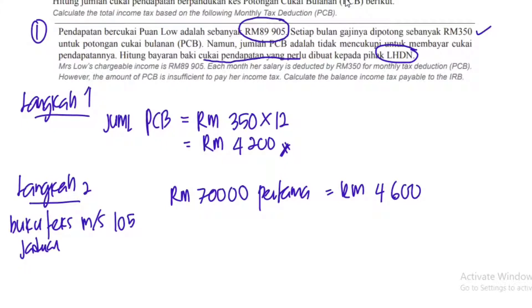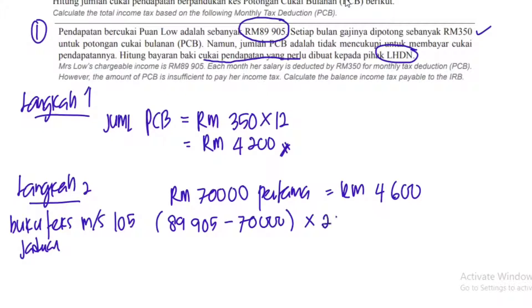Sekarang pendapatan dia RM89,999, ada baki. Kita tolak 89,999 dengan 70,000, lepas tu darab dengan persen yang ada dalam jadual tu juga — 21%. Kita akan dapat RM4,180.